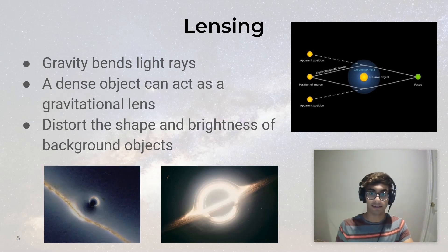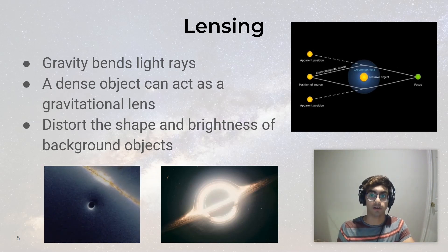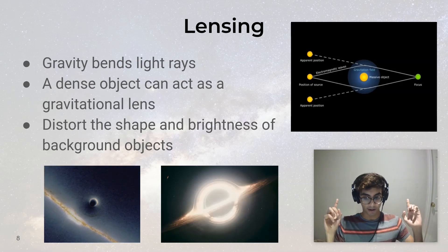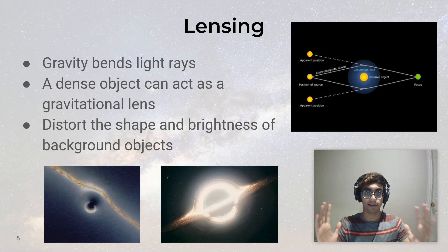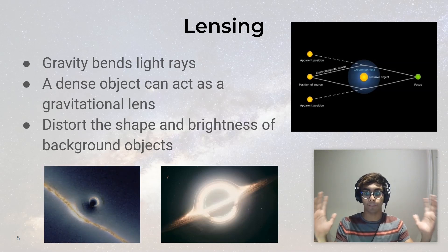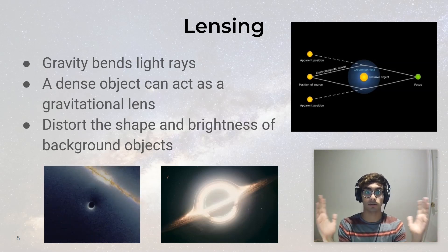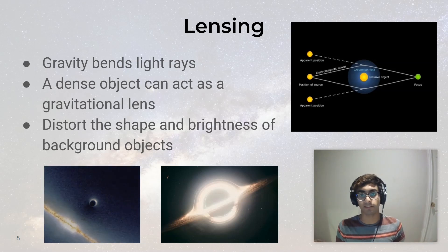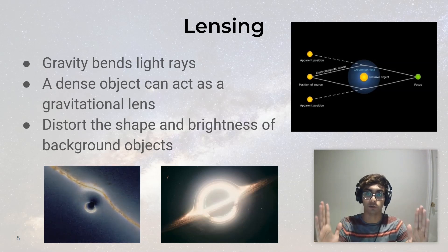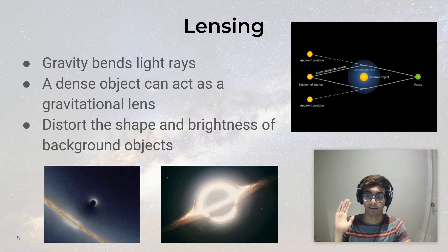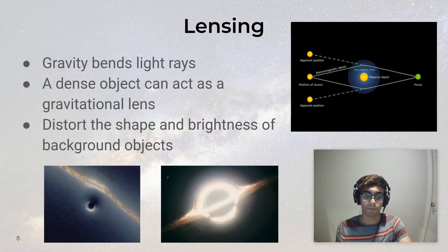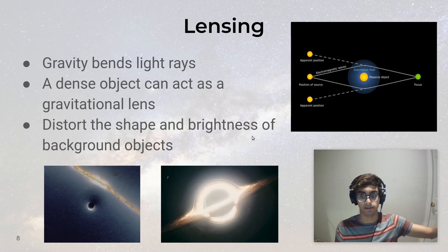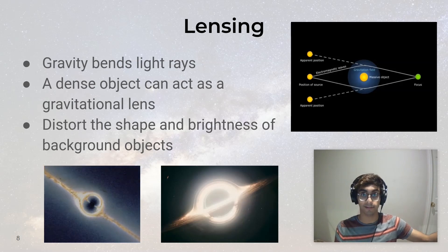Another effect that helps us see black holes and neutron stars is gravitational lensing — the idea that photons traveling by a really massive object get bent by the gravitational field near that object. That bending is kind of like the bending that light experiences passing through a glasses lens. And it causes distortion in the background behind the lensing object.